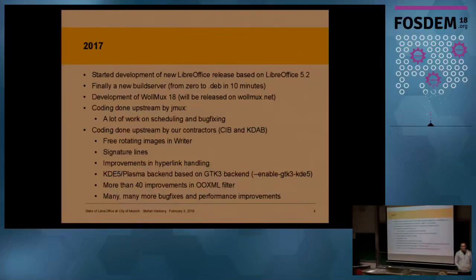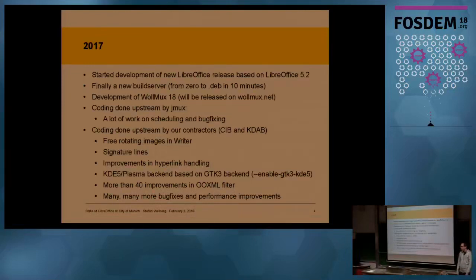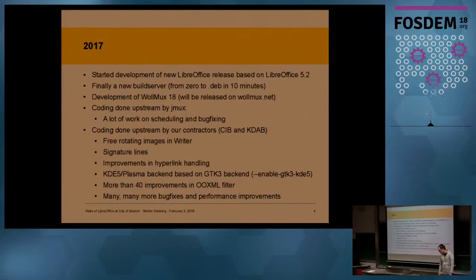Work sponsored includes: 3D rotating images, border frames, signature lines as Samuel talked about today, improvements in hyperlink handling, the KDE5 Plasma backend which is based on GTK3, a lot of work by KDAB in cooperation with CIB, and more than 40 improvements in OOXML — plus many more bug fixes and performance improvements.